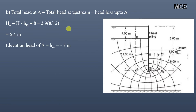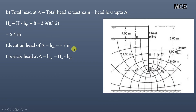The elevation head of A equals minus 7 meters. We can see the distance of point A from the datum is 1 plus 6, equal to 7 meters. Since we are moving in the downward direction from the datum, it is negative, giving minus 7 meters. The pressure head at A equals the total head at A minus the elevation head of A, which is 5.4 plus 7, equal to 12.4 meters.